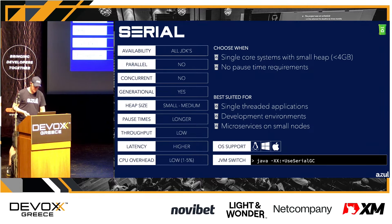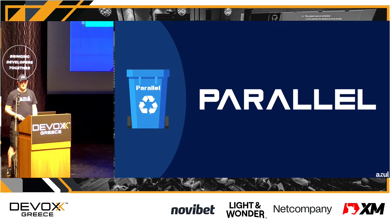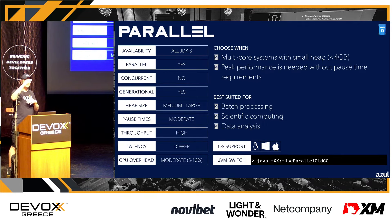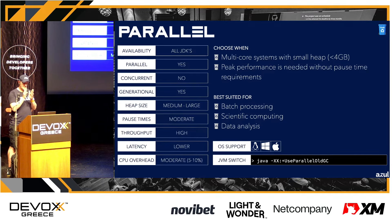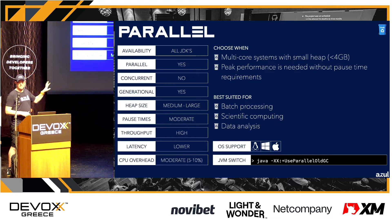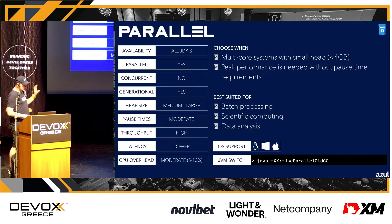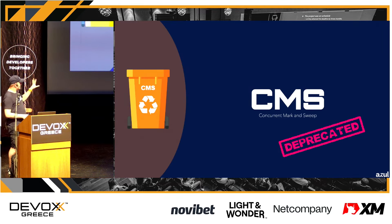Parallel GC is for multi-core systems — same principle as serial but all threads do garbage collection in parallel. This is known as the throughput collector: throughput is the ratio of time in your application versus time spent in GC. Because many threads work on GC in parallel, GC pauses are short, making throughput very high. Pauses are not really predictable, but it's great for batch processing, scientific computing, and data analysis.